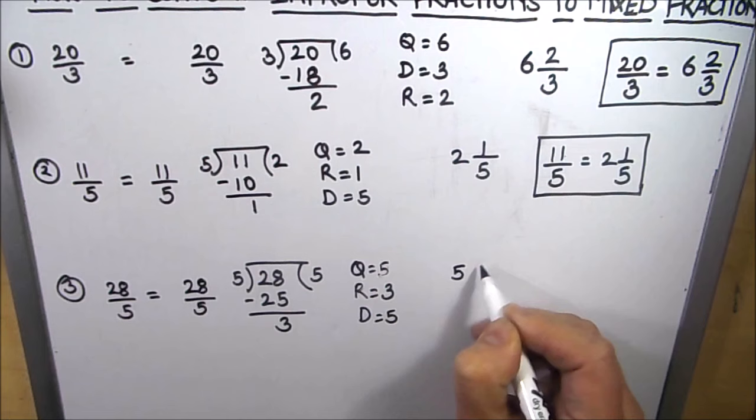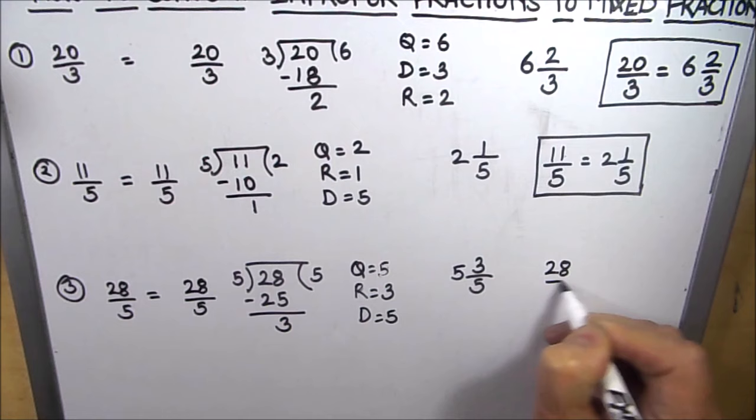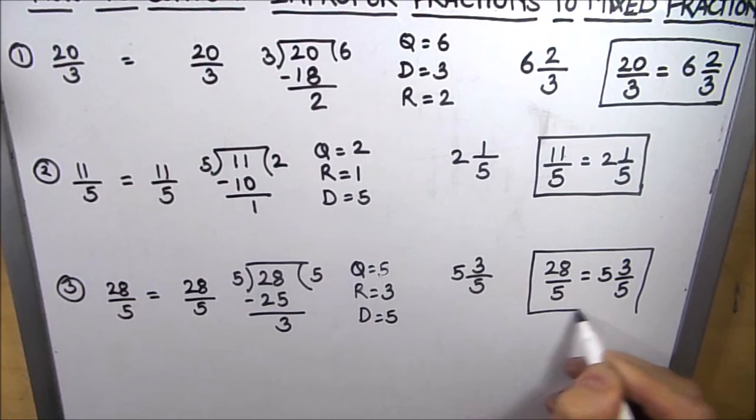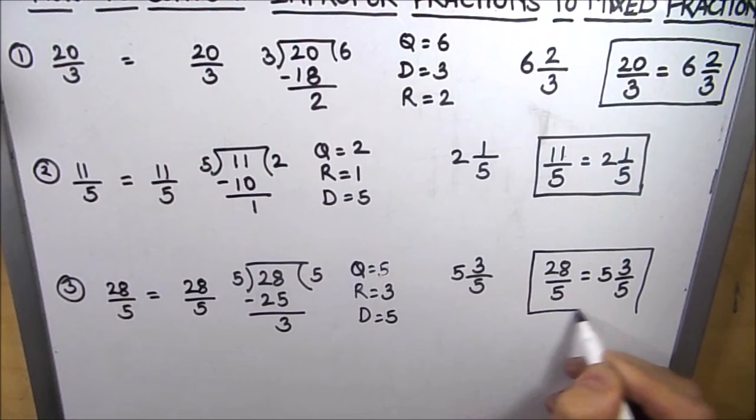So our mixed fraction is quotient and the remainder part over the divisor. So our 28 over 5 is now 5 whole parts and 3 fifths as a fractional part. So this is our mixed fraction for 28 over 5. I hope you now got an idea how to convert improper fractions to mixed fractions and this video is helpful to you. Thanks for watching.